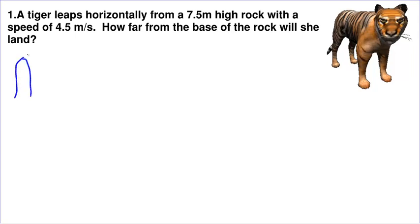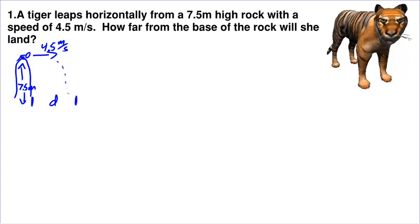Let's start by drawing a picture. There's our rock, and there's our tiger. The tiger is going to leap with a speed of 4.5 meters per second horizontally, and the height of the rock is 7.5 meters. How far from the base of the rock will she land? So we're looking for that distance.